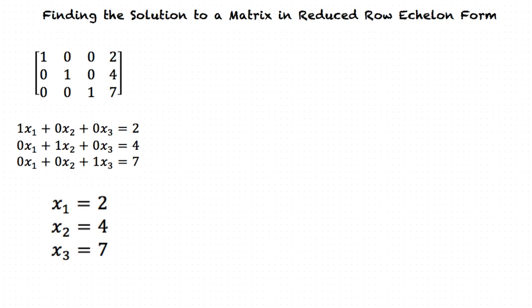x1 is equal to 2, x2 is equal to 4, x3 is equal to 7. Since each variable has one solution, the whole matrix only contains one unique solution.